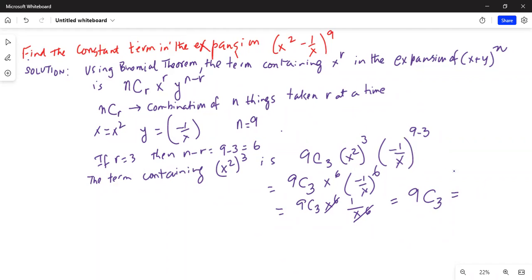84. Thus, the constant term in the expansion of (x² - 1/x)⁹ is 84. And that's your answer.